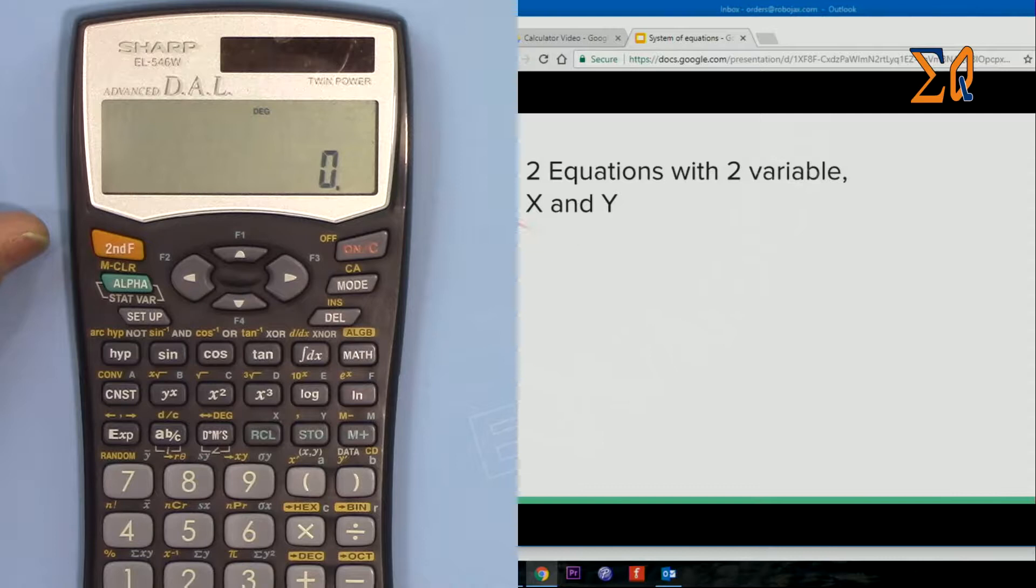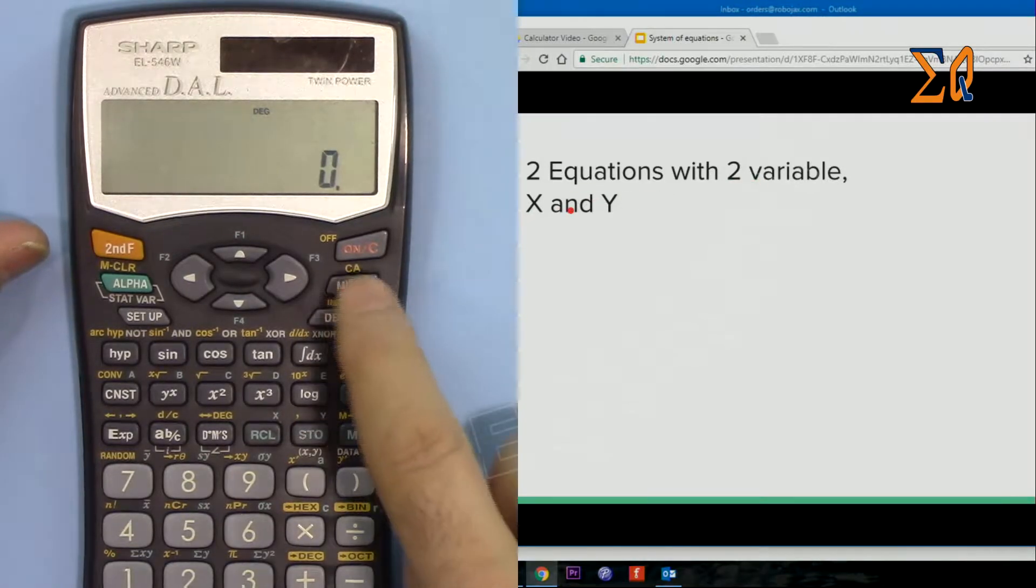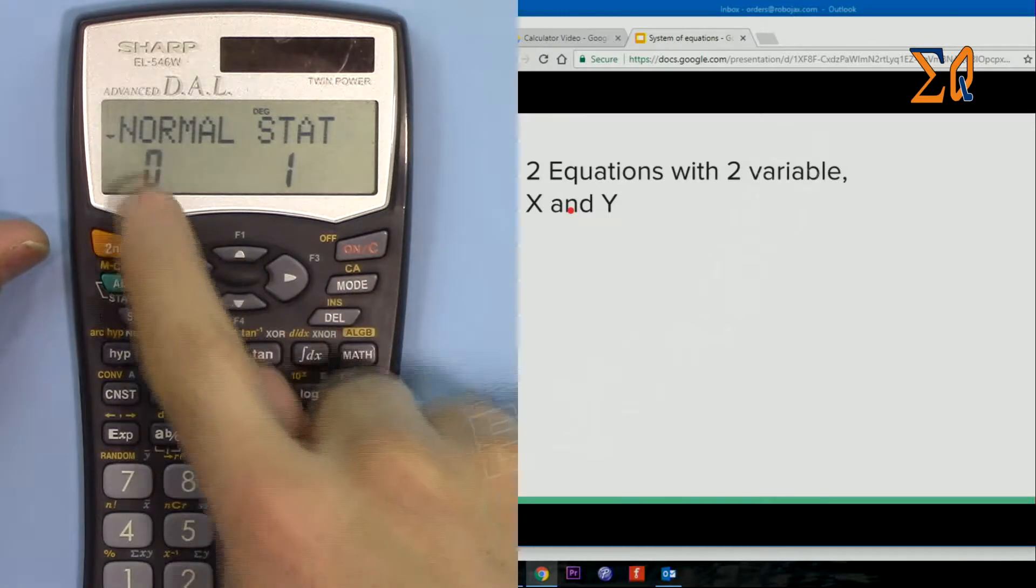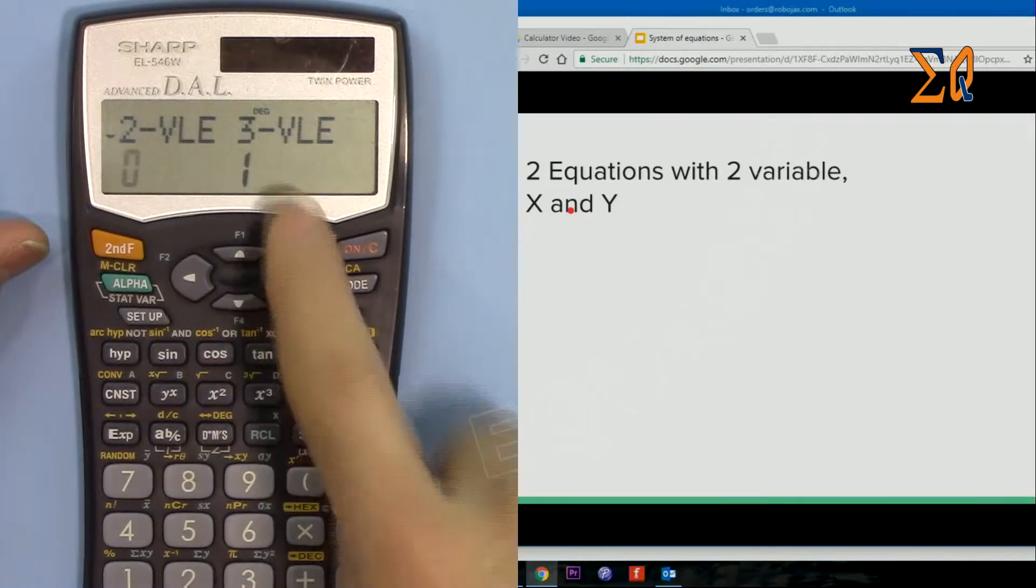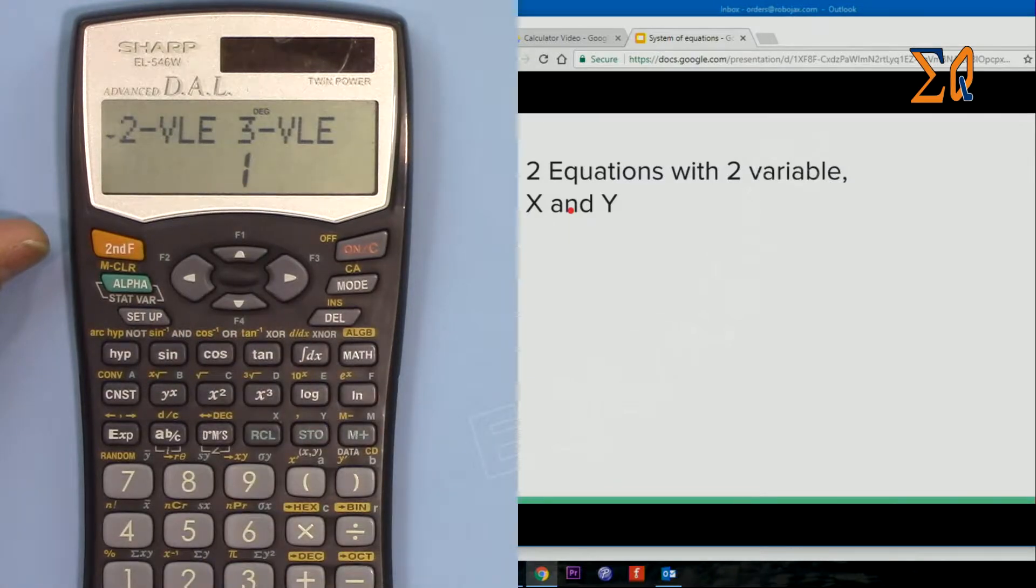So for a system of two equations we have two variables X and Y. Press MODE, this arrow shows that we can go down. Go down and press 2 for equation and then 2 VAL plus 0.